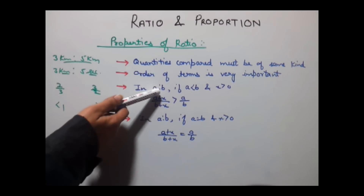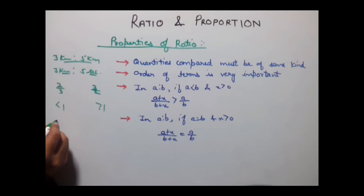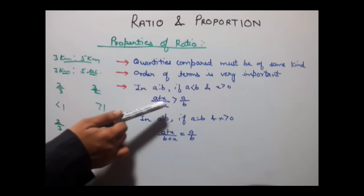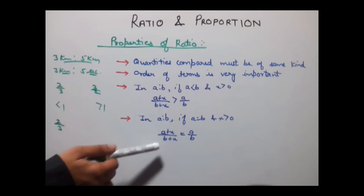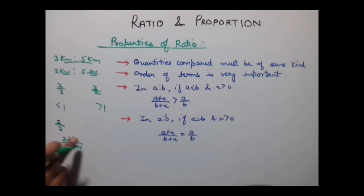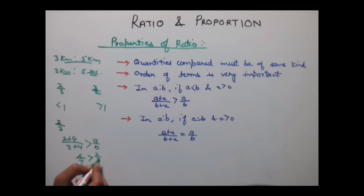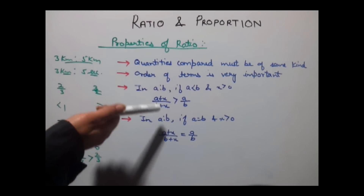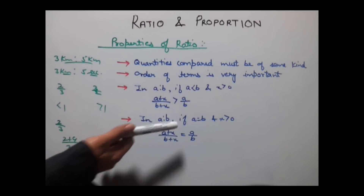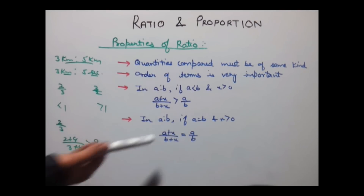In A ratio B, suppose A is less than B — take the example 2 by 3 where A is 2 and B is 3. If we add x to both A and B, where x is greater than 0, say x equals 4, we get 6 by 7. This ratio 6 by 7 is greater than the original ratio 2 by 3. The vice versa is also true. If A equals B and we add x, the ratio remains equal to A ratio B.